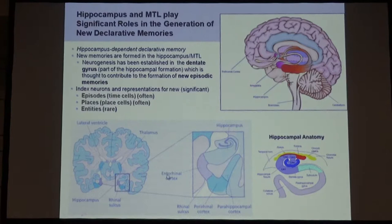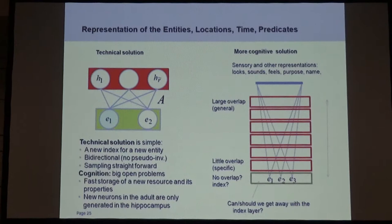The hippocampus has a lot of detailed substructures. Interestingly, there's a part called the dentate gyrus — the only part in the adult brain where it's known that new neurons are being formed even in adulthood. That might hint that new indices are needed and new neurons are formed. But the relationship between neurogenesis and the index function is not so well known.